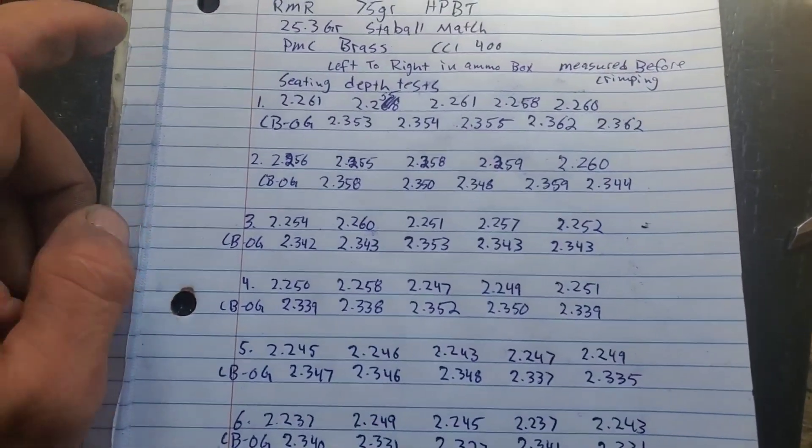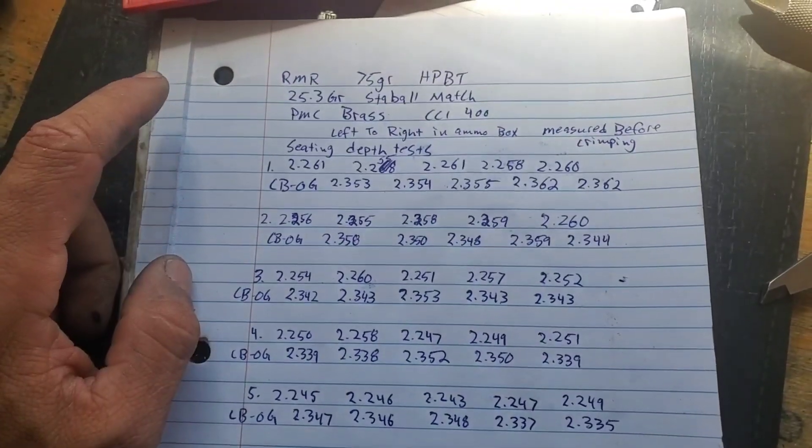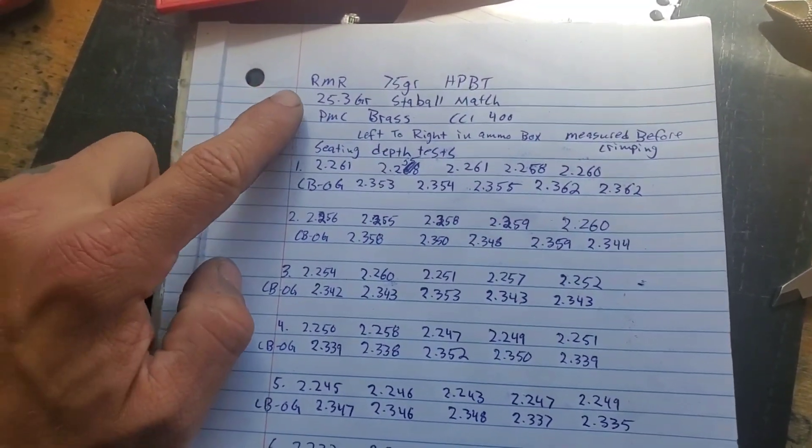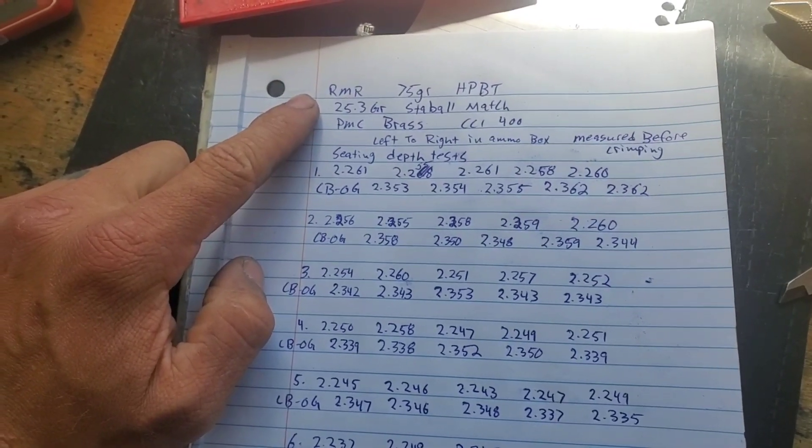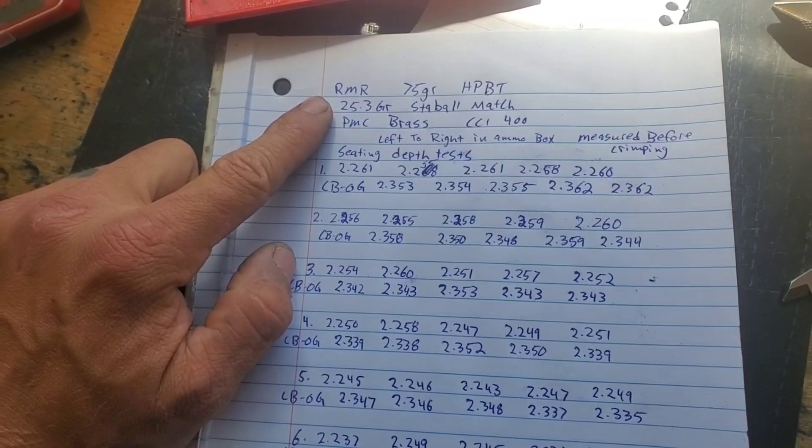Okay, I'm going to talk about this right now before I forget, while it's fresh in my head. So once again, we're back to the RMR 75 grain hollow point boat tails. I went to that 25.3 grains of Staball Match.